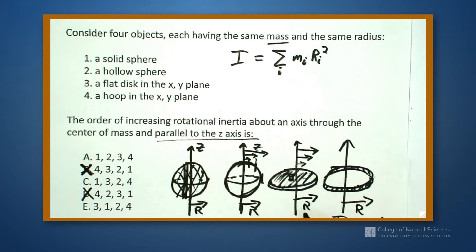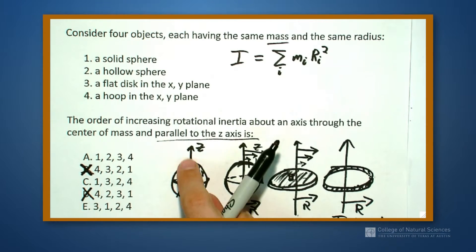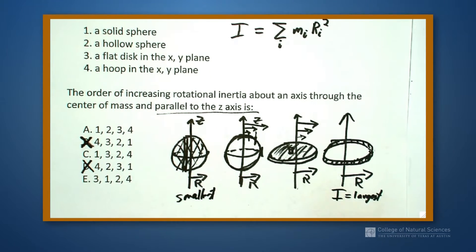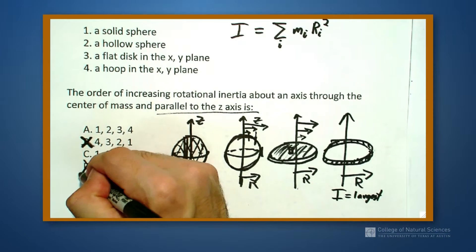So the sphere is going to be smaller than our disk, and this ring here has more mass on the outside of it. This has that disk part in the middle. So I'm going to say one is going to be my smallest. So my largest was the ring, my smallest is the sphere.